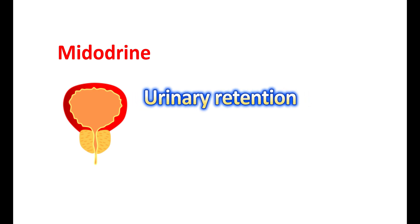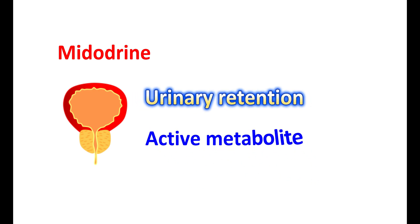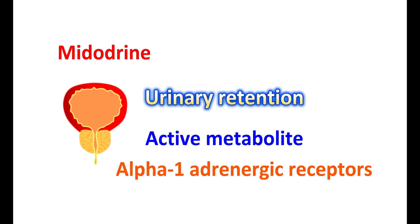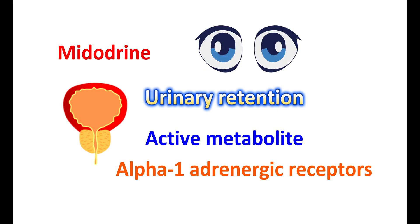Midodrine should be carefully used in people with urinary retention problems. As a prodrug, its active metabolite acts on alpha-1 adrenergic receptors on the bladder, producing bladder constriction and increased urinary urgency; however, the urethral pathway is narrowed, leading to urinary retention. Midodrine should also be used carefully in people with visual problems, as it may increase intraocular pressure and induce glaucoma.